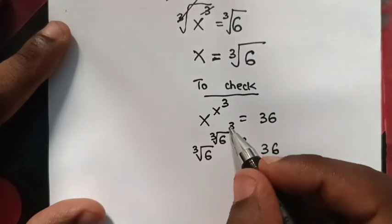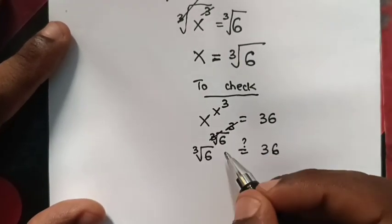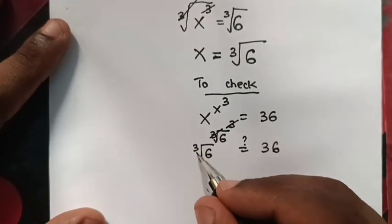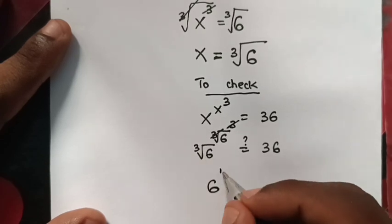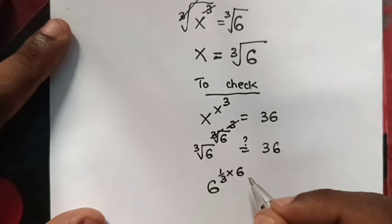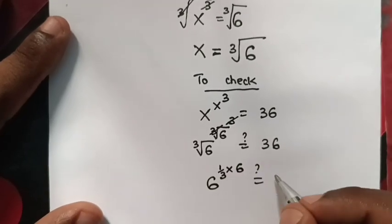The power of 3 will cancel with the cube root. Then it will be 6^(∛6) which is the same as 6^(1/3 × 6), which equals 36.